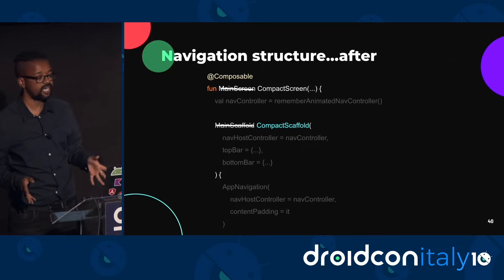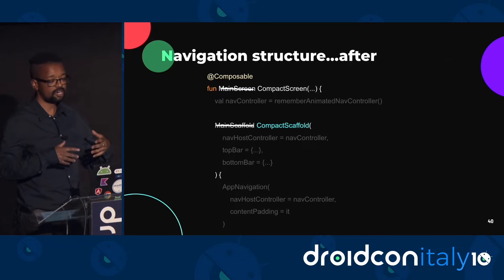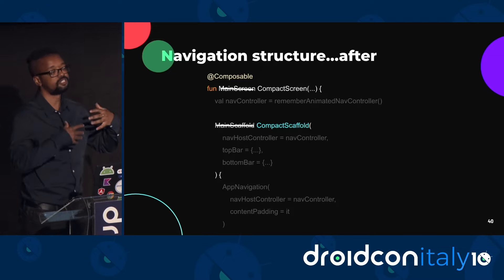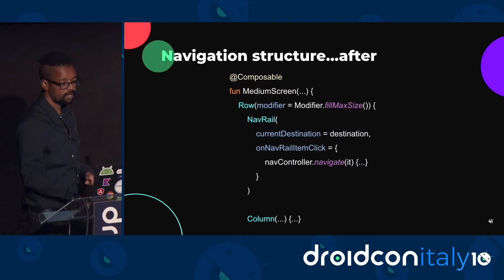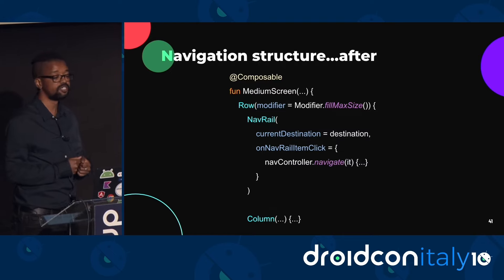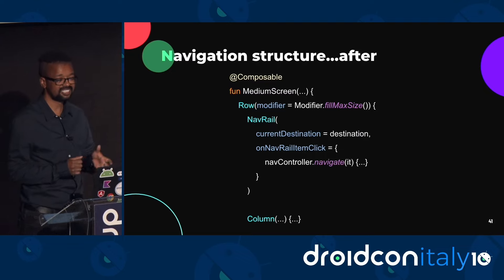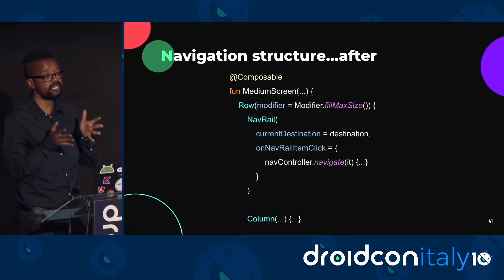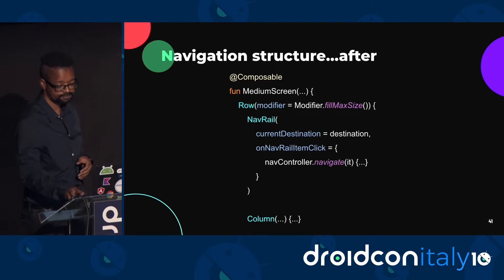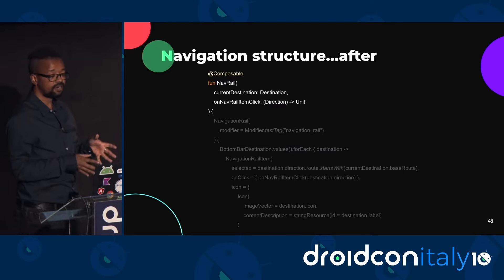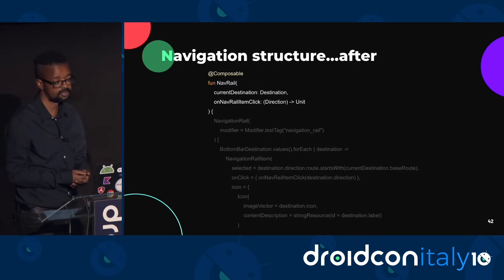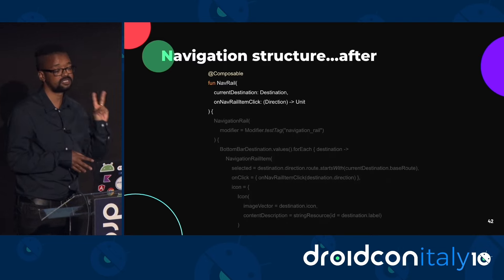I refactored the main screen and renamed it compact screen, because it now represented the compact window size class configuration — in particular its use of the bottom app bar. Then I created a medium screen composable representing the medium window size class configuration. It contains a row composable that splits the screen into two sections or columns, the first column being the nav rail. The nav rail composable is a wrapper I created that sets up the material navigation rail composable.